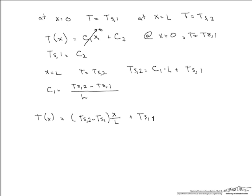Now we can find our Q, which is minus k times A, dT/dx. So we differentiate our T(x) with respect to x. And our Q equals minus k times A, Ts2 minus Ts1 over L.